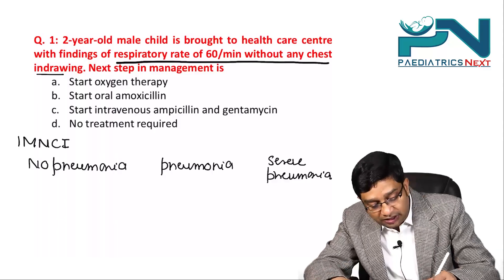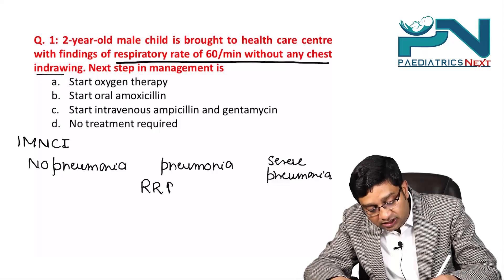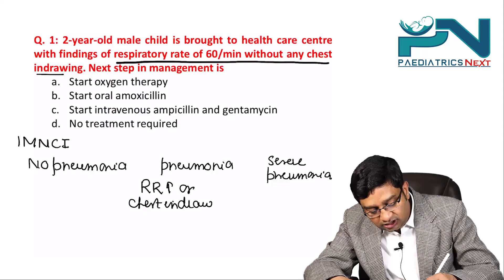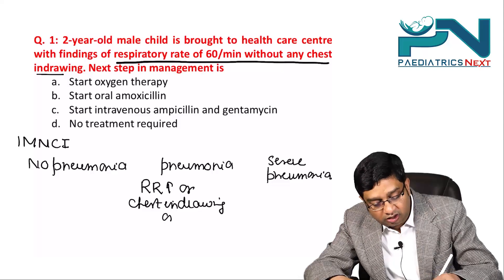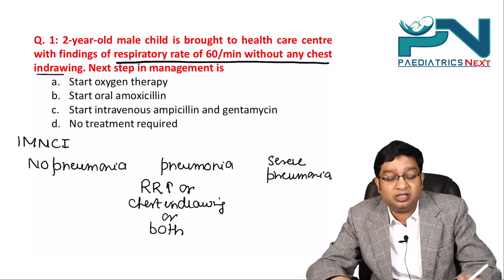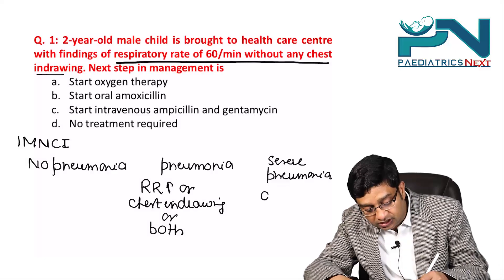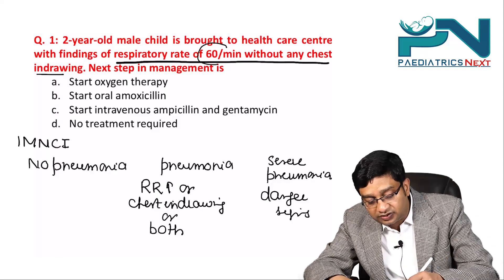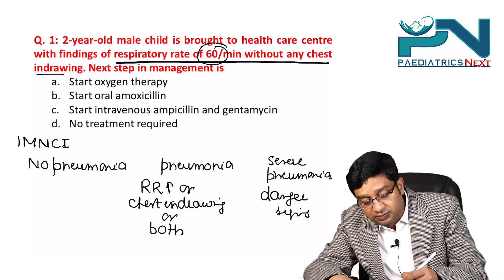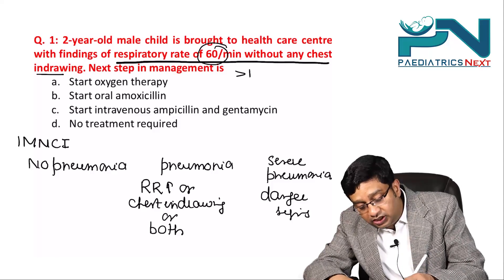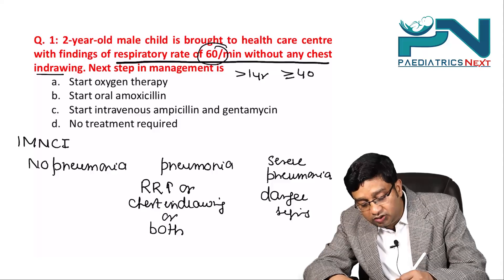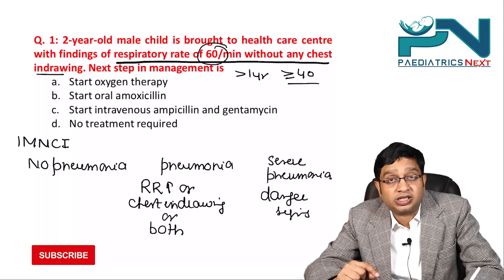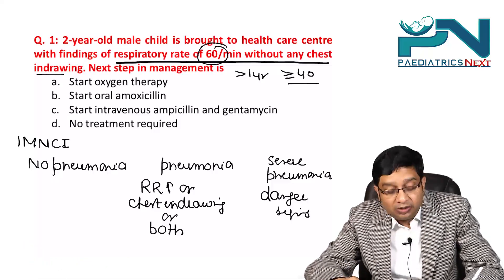If the respiratory rate is increased or there is chest indrawing or both, it is classified as pneumonia. Severe pneumonia is defined by the presence of danger signs. Here, the child is 2 years old with a respiratory rate of 60. Above one year of age, a rate of ≥40 is abnormal, so this is classified as pneumonia.